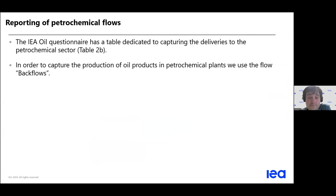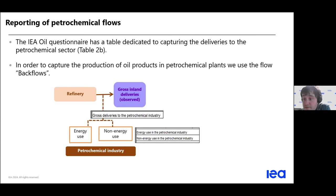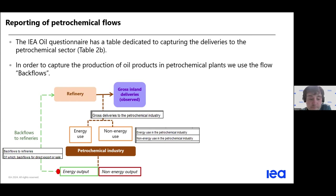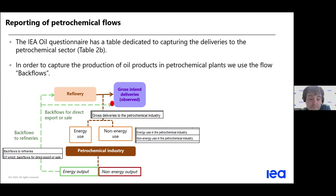One last thing is backflows — products which have been refined and are sent back as input to the refineries. It has to be reported both in Table 2B and in Table 1 as backflows. It can also be reported in Table 3 as consumption — either energy or non-energy — in the petrochemical sector. The product can go back to the refinery as backflow, or from the industry not going to the refinery, which is just a transfer.